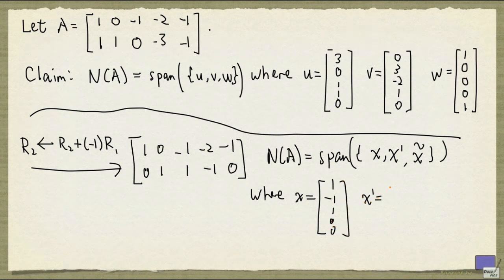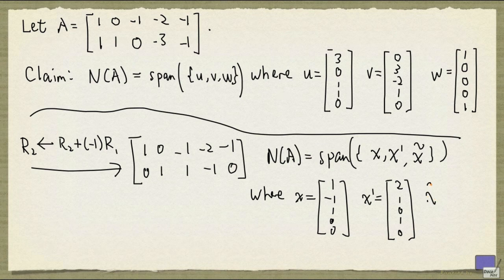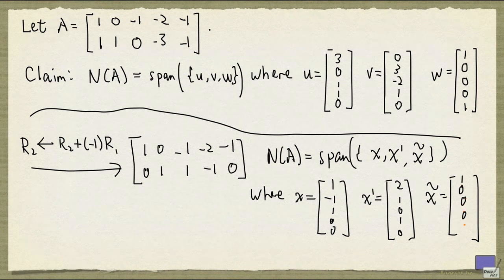And I can get x prime by setting the variable corresponding to this column to 1. And I will get 2, 1, 0, 1, 0. And finally, my x tilde would be 1, 0, 0, 0, 1 as well.